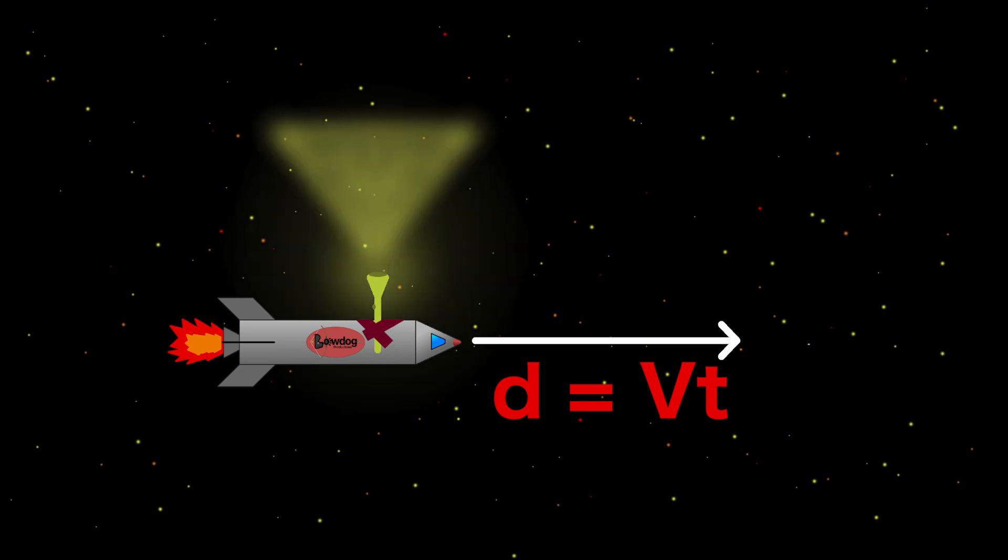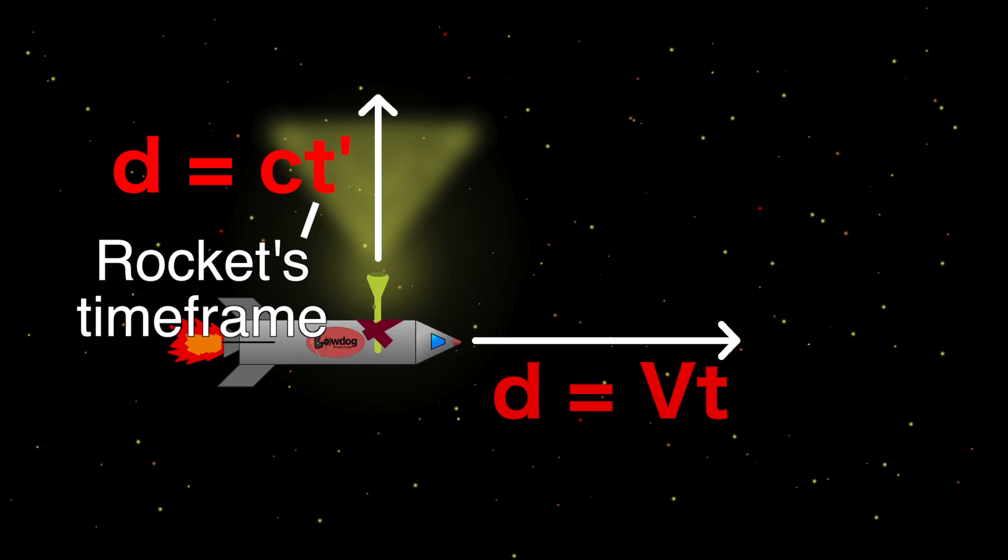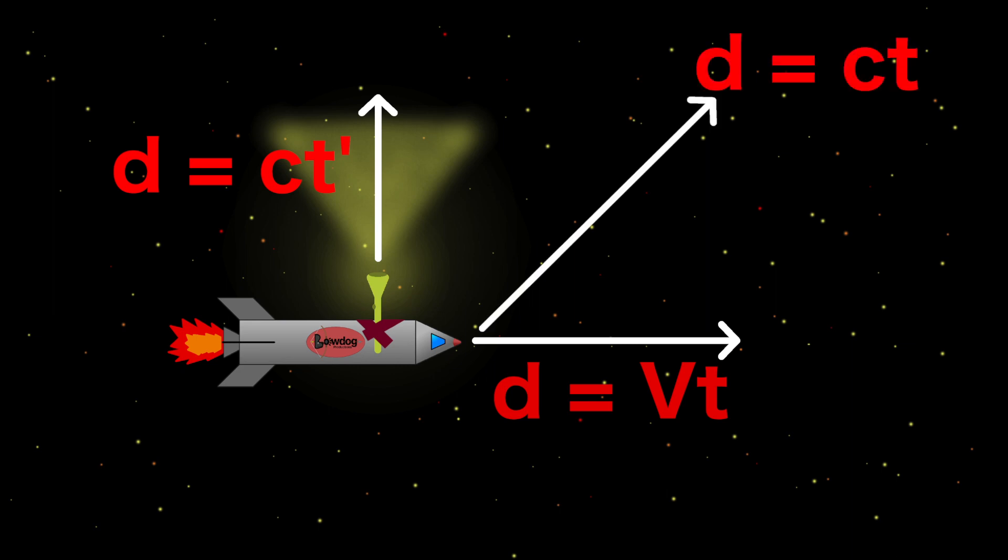From the rocket's perspective, the light travels in a straight line at velocity c, but since the rocket is in a different reference frame from us, they experience the flow of time differently. We will call this t prime to signify the amount of time experienced by the rocket's reference frame. Now, from our stationary perspective, the light moves at an angle, since the rocket is moving relative to Earth.